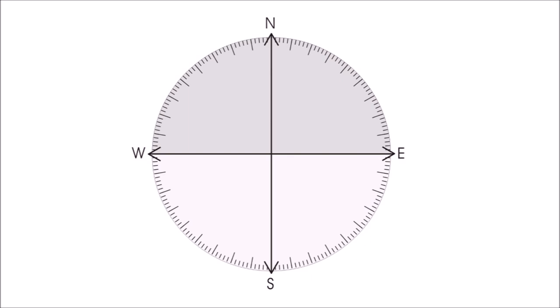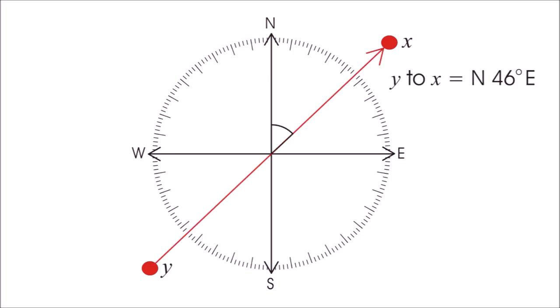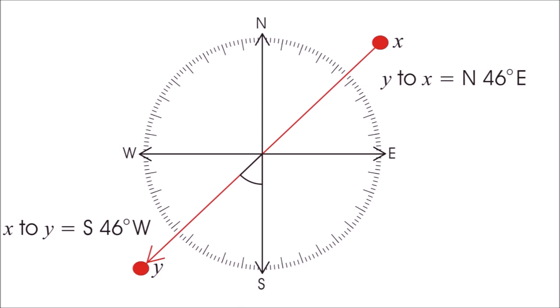The military divide a compass into north and south regions and use these to define bearings. As an example, from point X to point Y: going from Y to X would be north 46 east — from the north, you rotate 46 degrees towards the east. From X to Y, that would be south 46 west — from the south, you rotate 46 degrees towards the west.